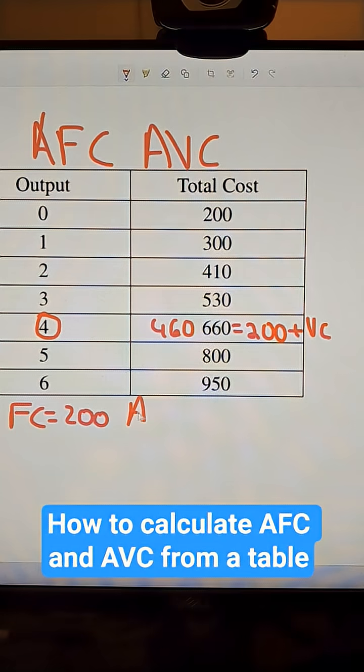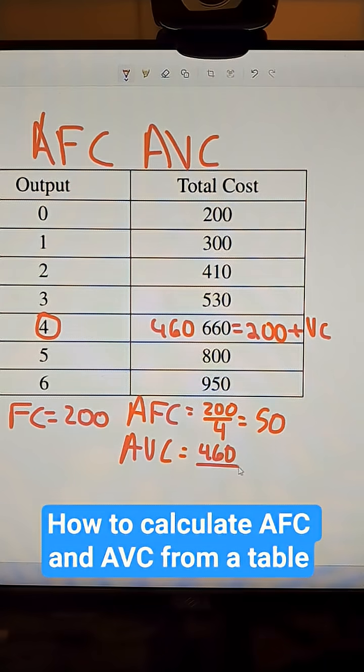So the average fixed cost would be 200 divided by 4, and that would be 50. Then my average variable cost would be 460 divided by 4, and that's going to be 115.